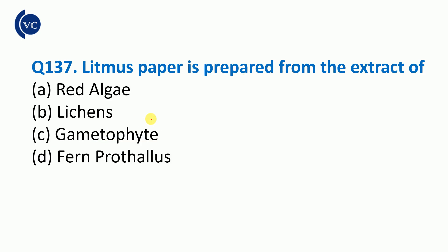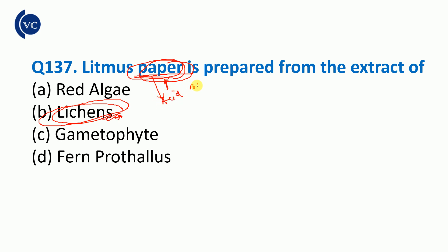Next question: Litmus paper. Litmus paper is prepared from the extract of lichen. How is it structured? It is prepared from the extract of lichen. Lichen is also made of lichen — it is an indicator of acid or base. This is an indicator.